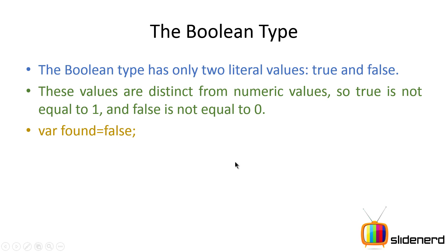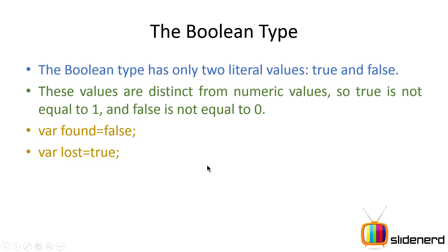Let's take a look at how it looks. Where 'found' is false — a variable called 'found' was given the value false, and another one was given the value true. This is how boolean works, and this is why we would use it.